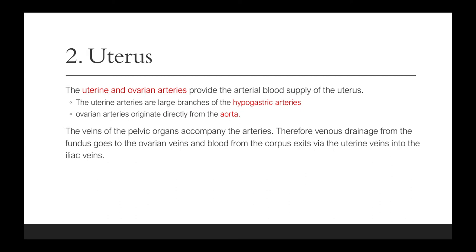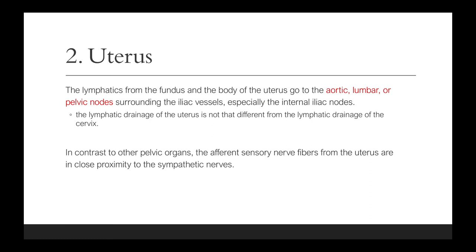The uterine and ovarian arteries provide the arterial blood supply of the uterus. The uterine arteries are large branches of the hypogastric arteries, while the ovarian arteries originate directly from the aorta. The veins of the pelvic organs accompany the arteries. The venous drainage from the fundus goes to the ovarian veins, and blood from the corpus exits via the uterine veins into the iliac veins. The lymphatics from the fundus and body of the uterus go to the aortic, lumbar, or pelvic nodes surrounding the iliac vessels, especially the internal iliac nodes.